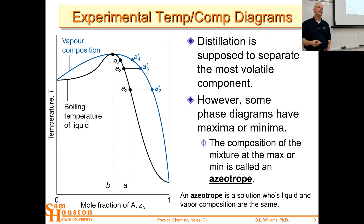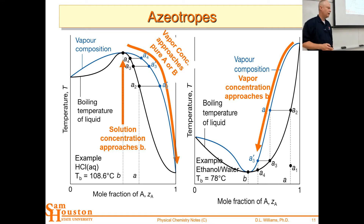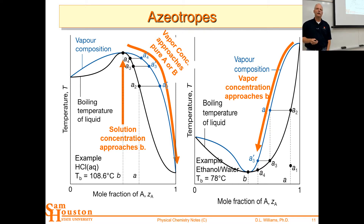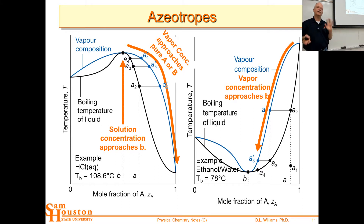Whenever the azeotrope is boiling, that's what you collect in the collection flask. Here on the left is a high-boiling azeotrope. Looking at the temperature axis, it has a higher boiling point than either of the pure substances, so that's going to stay in the pot — in the distillation still at the bottom.